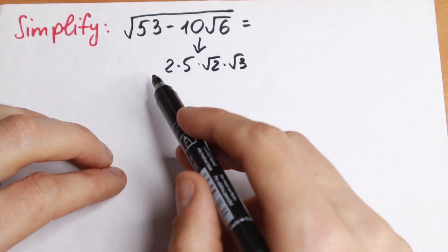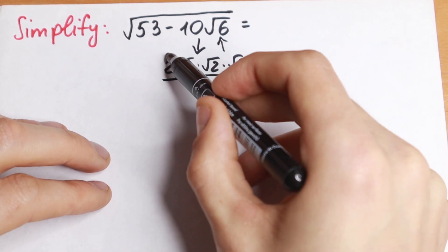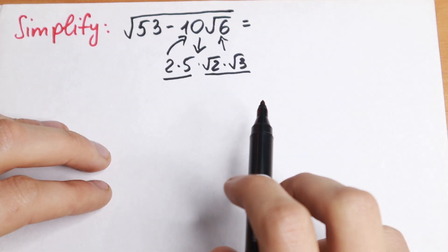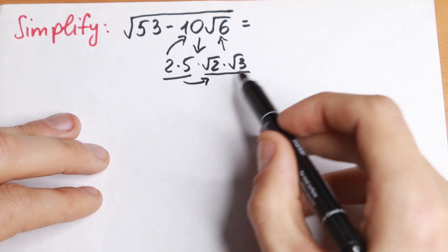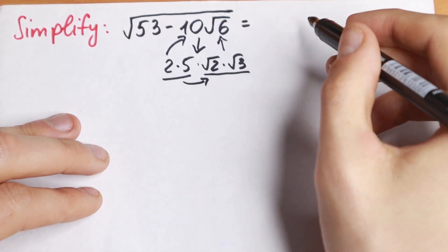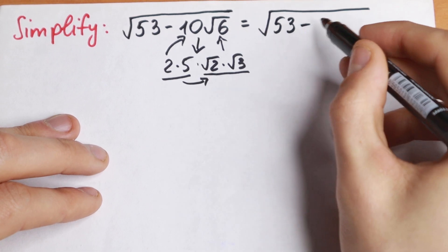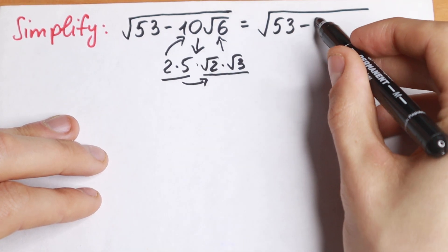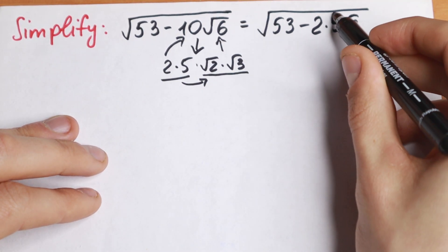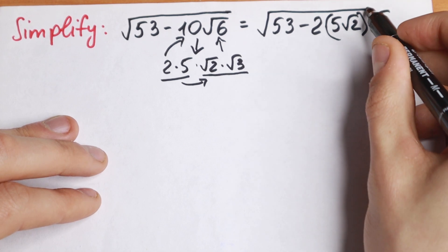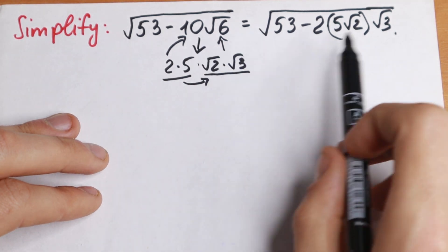So we're just rewriting this as a product. This is our √6 and this is our 10. Let's group this 5 with this √2 and separate the √3. We will have √53 minus 2 times 5√2 times √3. We just rewrote 10√6 in that way — this is the same expression.